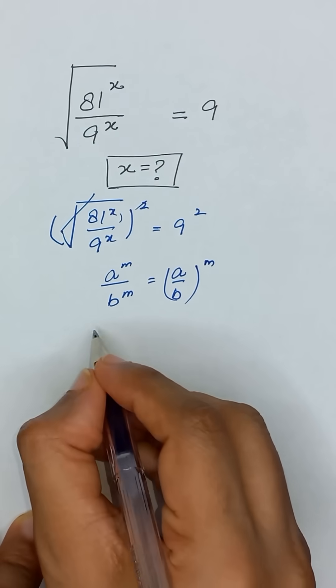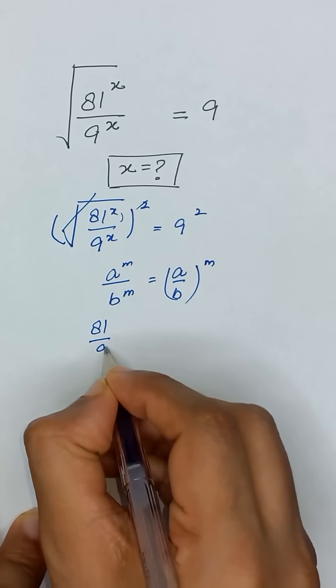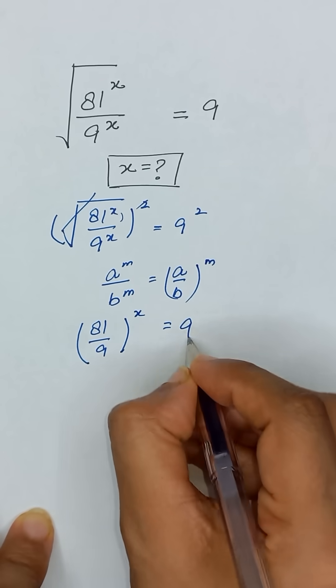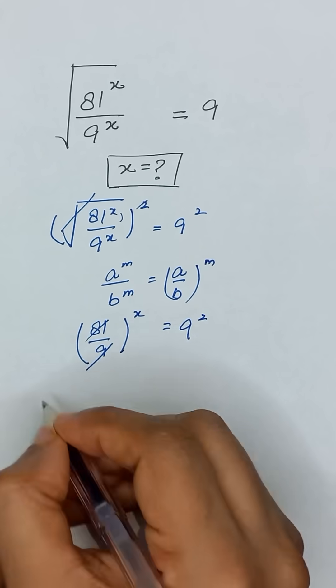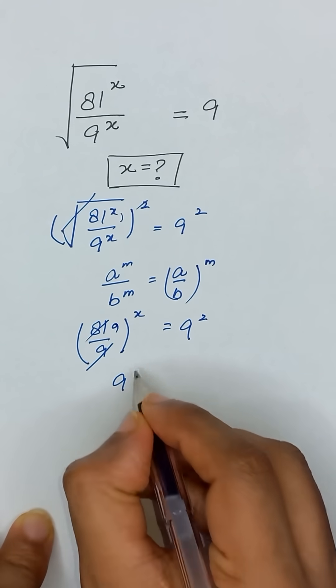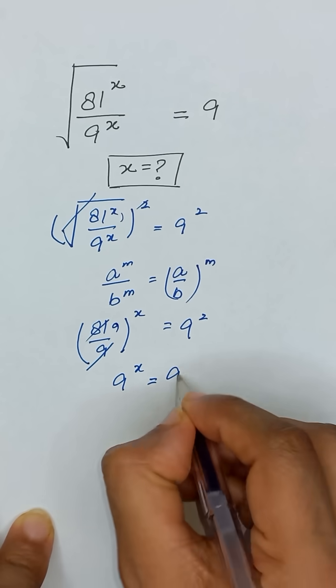So it will become 81 divided by 9 to the whole power x is equal to 9 squared. Since 81 divided by 9 is 9, it will become 9 to the power x is equal to 9 squared.